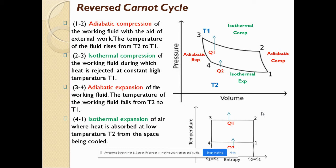In the adiabatic compression process (1 to 2), the temperature rises from T1 to T2, where work is done on the working fluid. The second process, isothermal compression (2 to 3), involves heat being rejected at a constant high temperature TH. In the adiabatic expansion process (3 to 4), the temperature falls from T2 to T1.